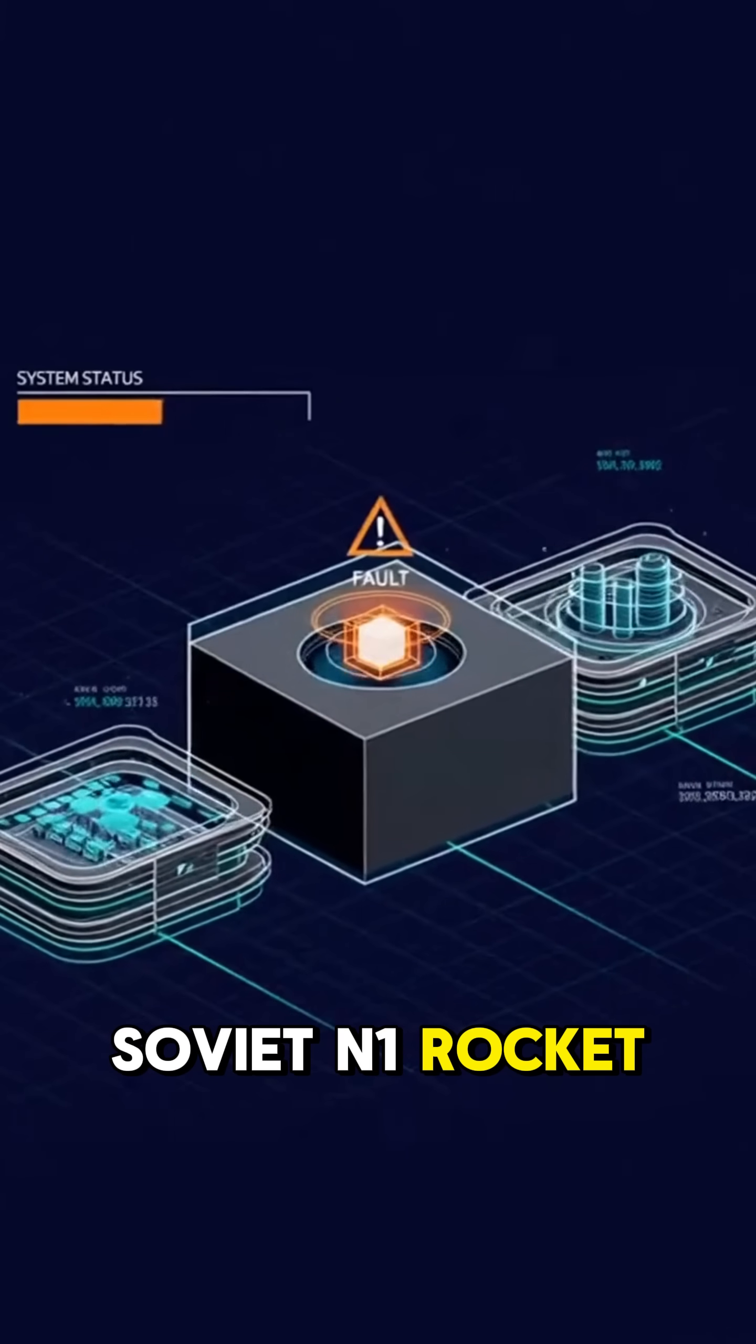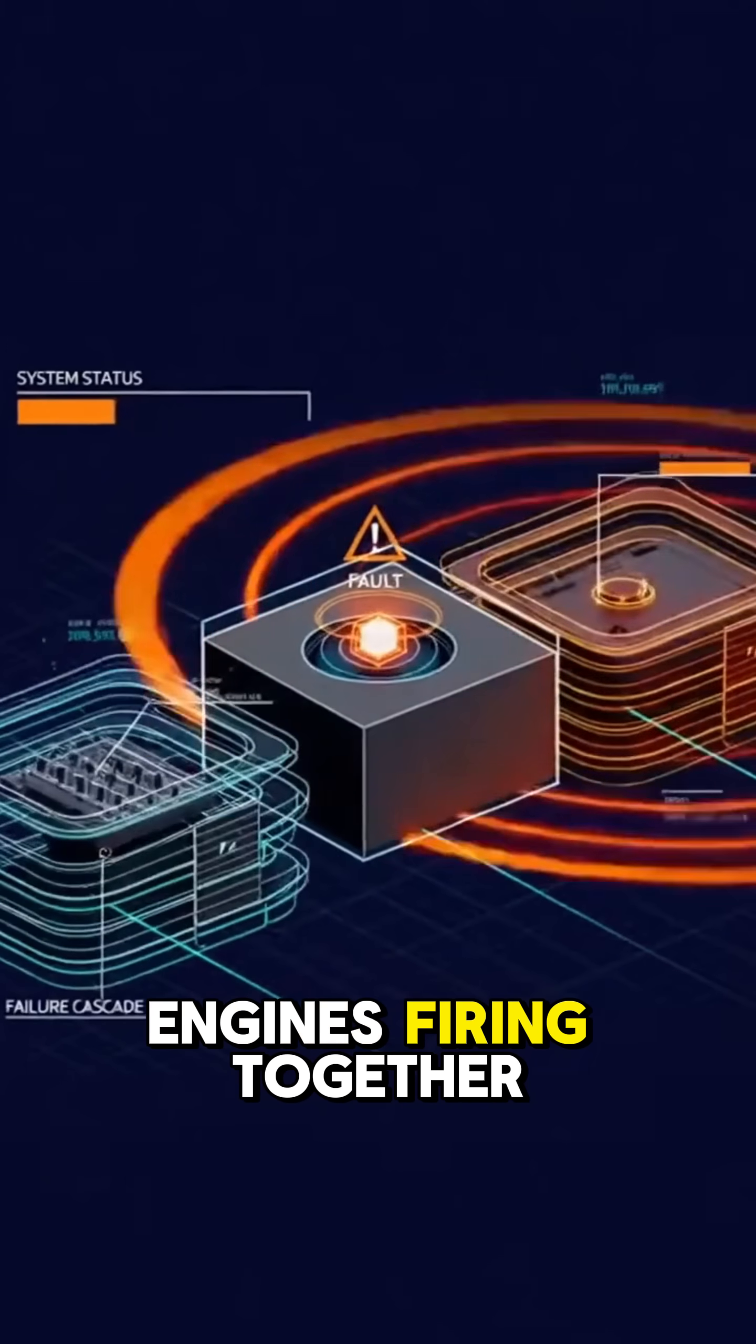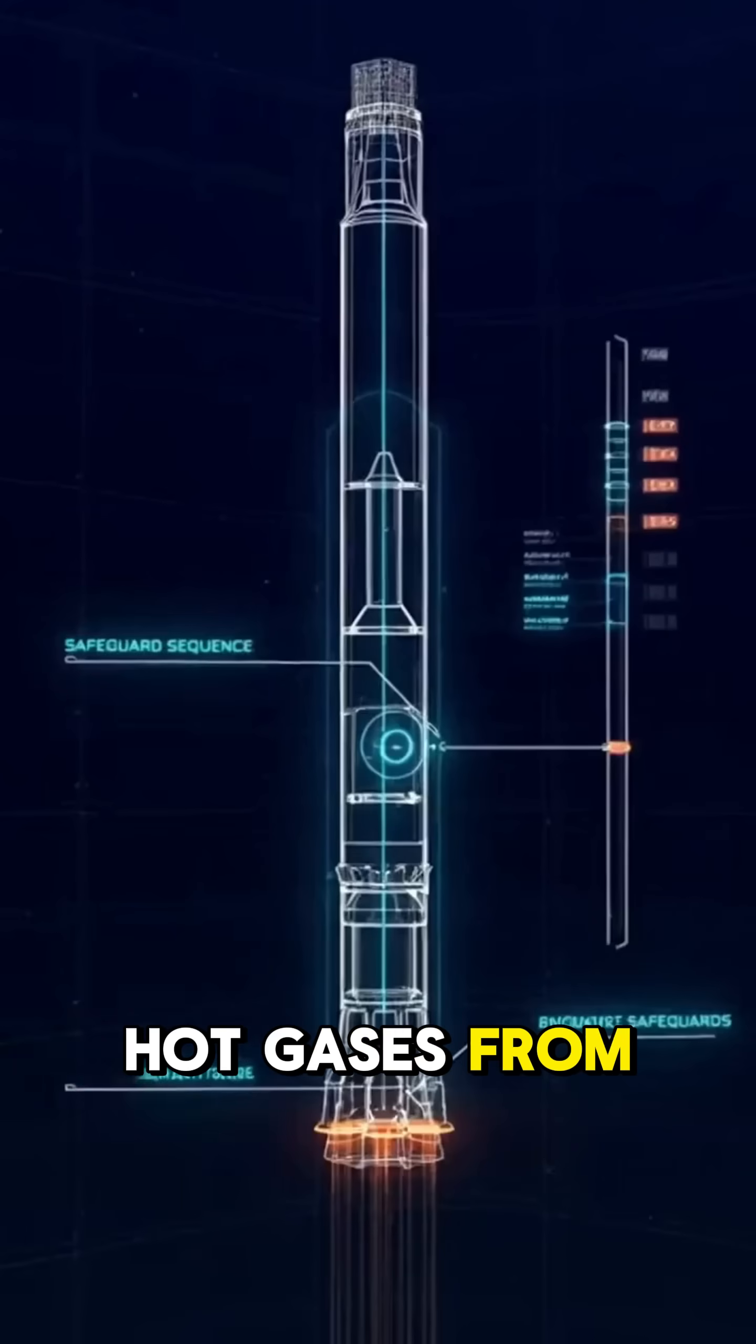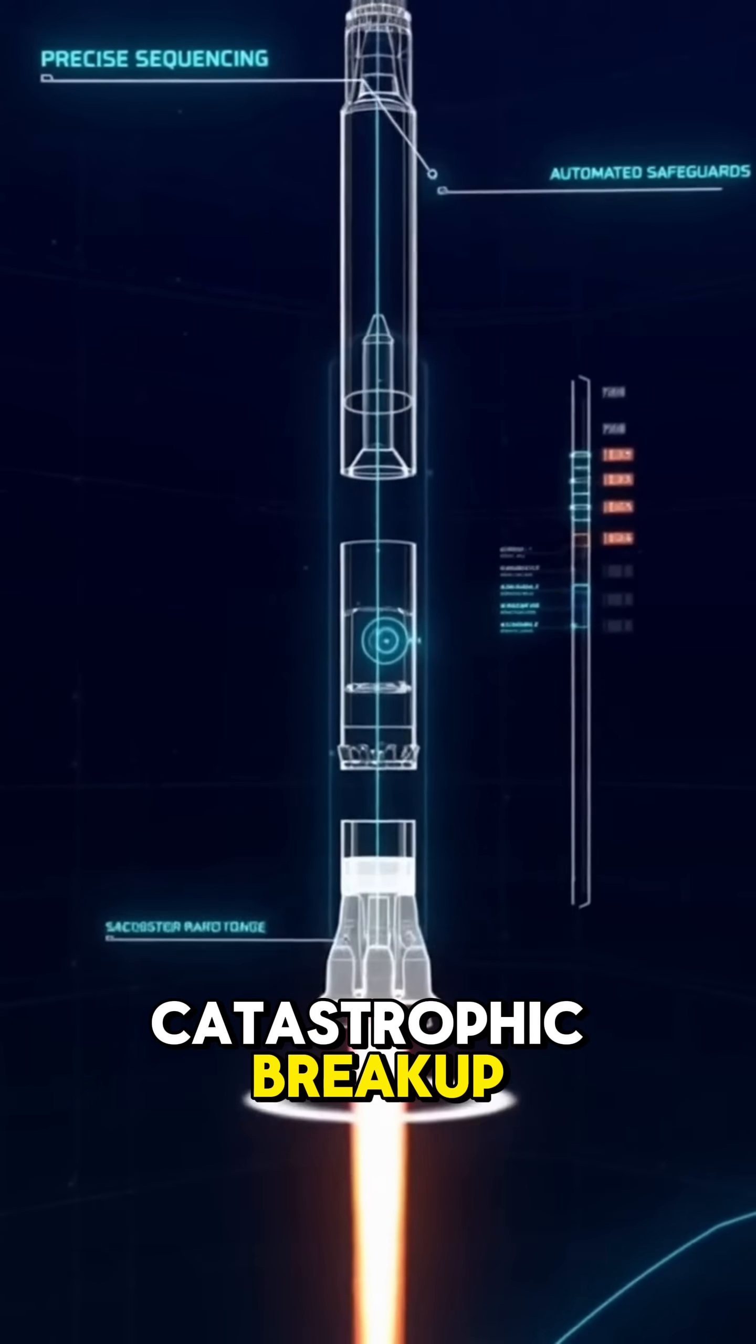Consider the Soviet N-1 rocket. It had 30 engines firing together. One malfunction could trigger a chain reaction of failures. Hot gases from one misfiring engine could cause a catastrophic breakup.